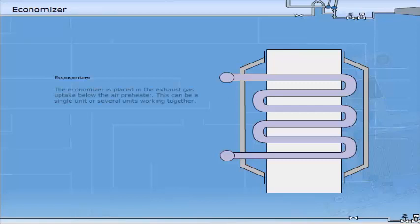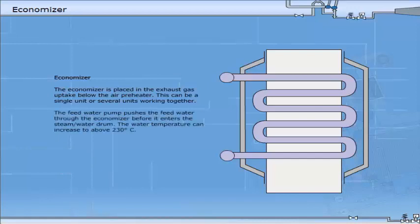The economiser is placed in the exhaust gas uptake below the air preheater. This can be a single unit or several units working together. The feed water pump pushes the feed water through the economiser before it enters the steam water drum. The water temperature can increase to above 230 degrees centigrade.